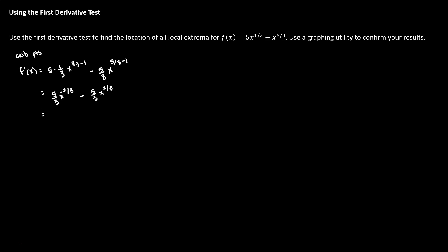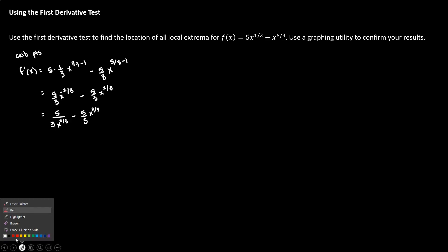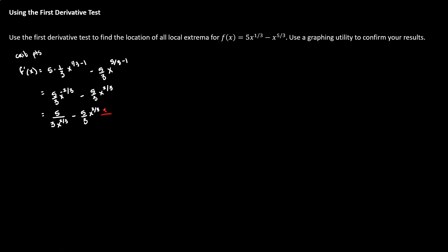A negative exponent means that factor belongs in the denominator, so we have 5/(3x^(2/3)) minus (5/3)x^(2/3). Getting a common denominator — three in both denominators, and we need x^(2/3) — we can write them over the same denominator, giving a numerator of 5 − 5x^(4/3). Since both terms have a factor of 5 we can factor it out.